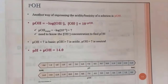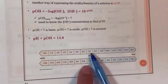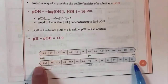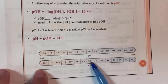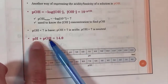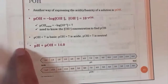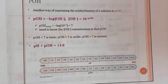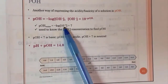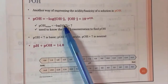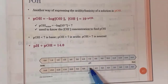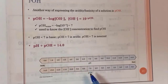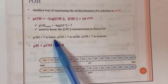pOH is kind of complementary to pH. pOH formula is minus log of OH⁻. For neutral water at 25 degrees, pOH is 7. You see how 7 plus 7 gives 14. pH plus pOH equals 14. 6 plus 8 also gives 14 — it's complementary. If you know the pH, you can find pOH. They total up to 14.